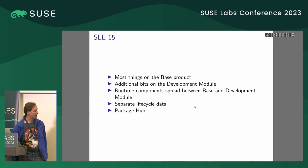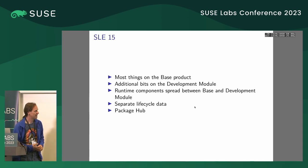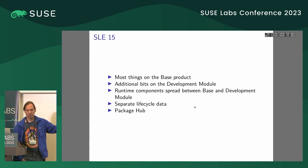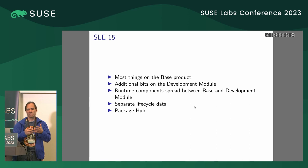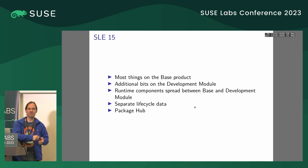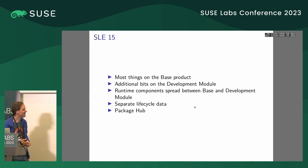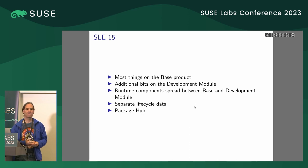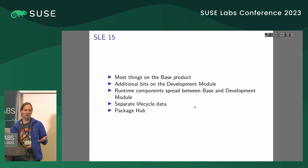With SLEE 15 we had the module structure: the base system module and the development module. Most of the toolchain things I listed were actually in the base system module, with additional bits in the development module. Where exactly the boundary lies was probably kind of a dice roll by some release or product manager — like whether GNU make was on the base image or in the development module. With GCC, we ship up-to-date versions every year into the development module, but the core runtime libraries are shipped in the base system module as updates.